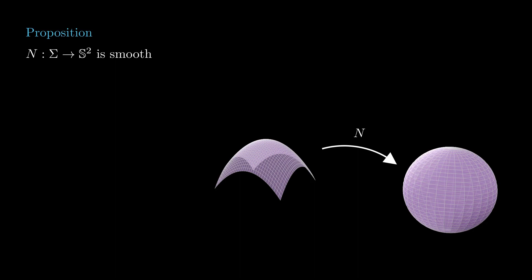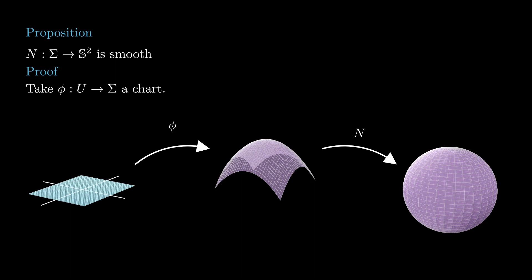The first thing we check today is that an orientation is smooth. To verify smoothness, we take a parametrization phi and check that n composed with phi is smooth. This turns out to be easy because of how we define the tangent plane: it is spanned by the partial derivatives of the parametrization, so to obtain the unit vector perpendicular to the tangent plane, we only need to take the cross product and normalize. From the definition of parametrization, these two partial derivatives are linearly independent, so this cross product is not zero.